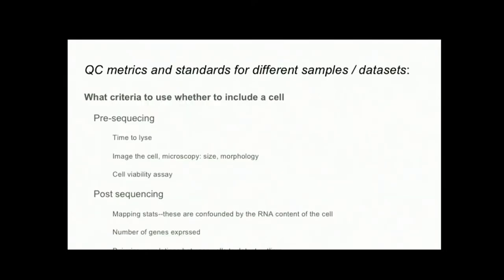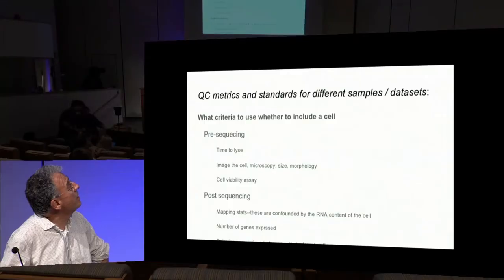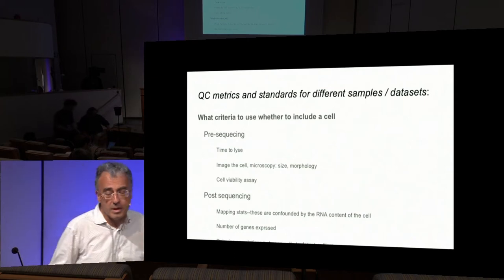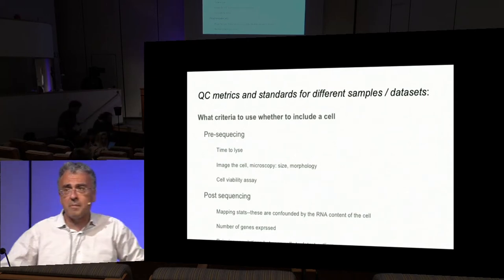Thanks. I think it was a great section. I learned a lot about single cell and about normalization. There were a number of topics that we addressed — I think about four sections. I will go one by one. The first is QC and standards, and the first question that we asked is what are the criteria to use whether to include a cell in an experiment.